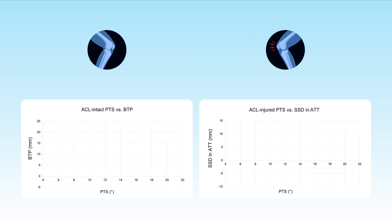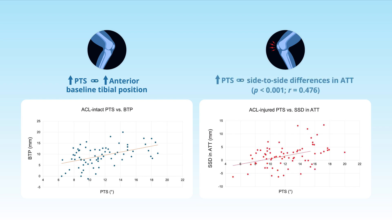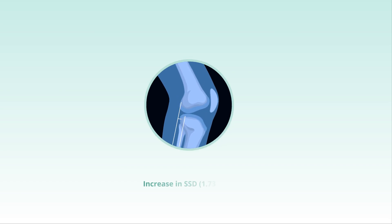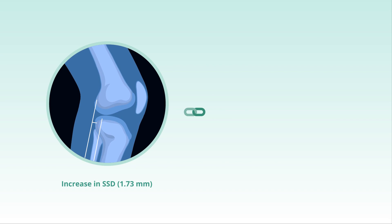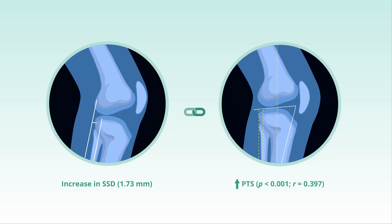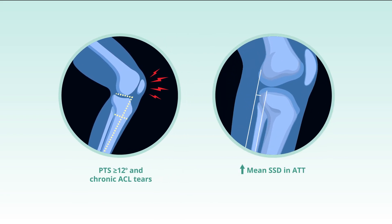The findings revealed a significant positive correlation between increased PTSD and an increased anterior BTB for ACL-intact knees, and increased SSD in ATT for ACL-injured knees. A significant increase in SSD of 1.73 mm positively correlated with increased PTSD in ACL-injured knees. Additionally, ACL-injured knees with a PTS of greater than or equal to 12 degrees and chronic ACL tears had significantly higher mean SSD in ATT compared to those with a PTS of less than 12 degrees or acute tears, respectively.